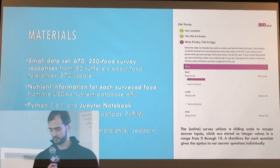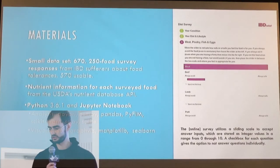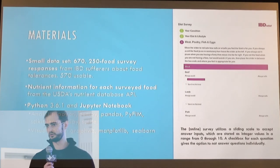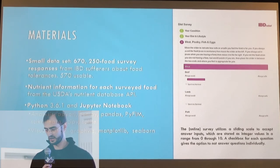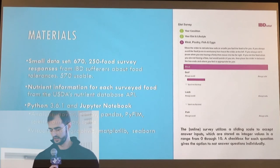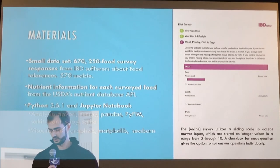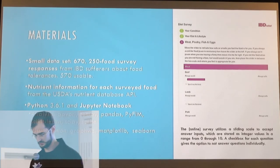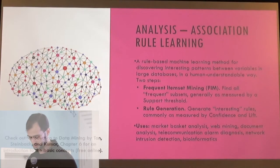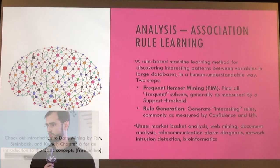The materials I had to work with was a pretty small dataset: 670 surveys from IBDrelief.com with 250 questions. You answered on a scale of 0 to 10 for each food, 0 being you could never eat the food, 10 meaning you could always eat it. This project was actually my first time using a lot of the data analysis tools in Python, my first time using Jupyter Notebooks and scikit-learn, and a bunch of machine learning techniques.